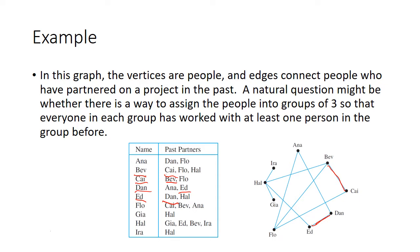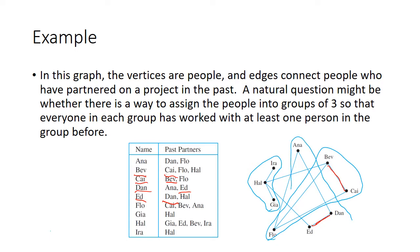A natural question you might want to answer from a graph like this is whether there is a way to assign people into groups of three so that everyone in each group has worked with at least one person in the group before. This is the type of question people would design an algorithm to answer. I think there is a way to do it by putting certain people together so everyone has worked with at least one other person in their group.